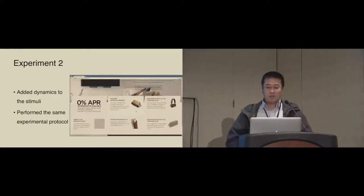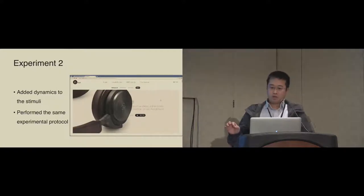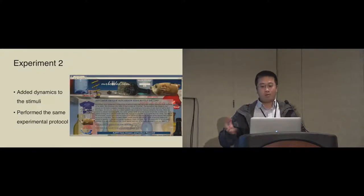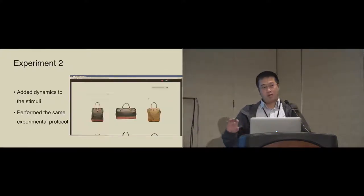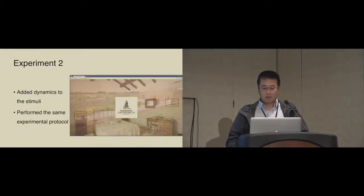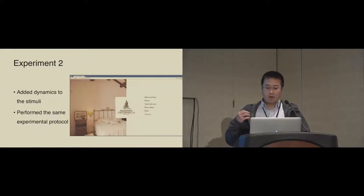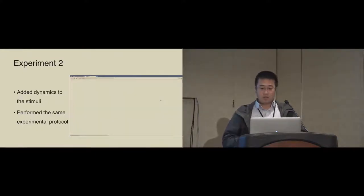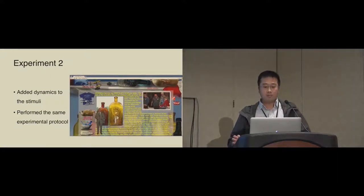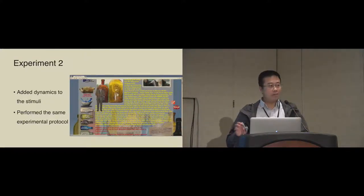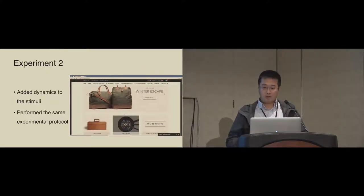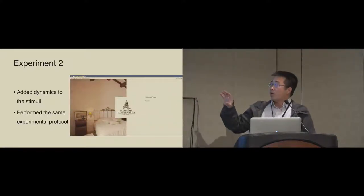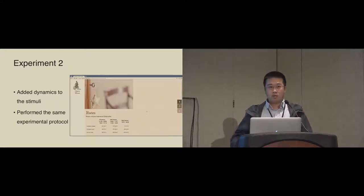In the first experiment, we used static webpages as stimuli. However, in the literature it has been shown that the measures of aesthetics and usability are often strongly correlated at the time of initial exposure when you're first seeing it, but it is less correlated, or maybe not at all, after interaction with the interface. That's why in our first study, we presented initial data on the association between activation of brain networks and usability and aesthetic ratings. These relationships may differ in interactive systems. So that's why in experiment two, we added dynamic elements to the stimuli in very simple form, such as scrolling down the webpage and clicking on one link to navigate to another one. We added these dynamics to the stimuli and performed the same experimental protocol in the second study.